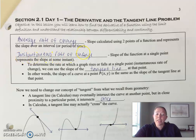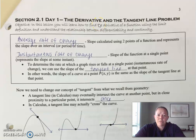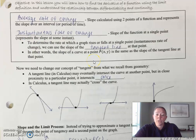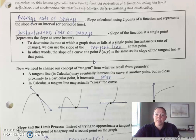Instantaneous rate of change — that's what's new — is the slope of the function at a single point. We talked about this in section 1.1. How do we find the slope of a tangent line or an instantaneous rate of change? That's what we're going to explore today. Instantaneous rate of change and slope of a tangent line are the same thing, and we're going to add another phrase called the derivative. All three of those mean the same thing.